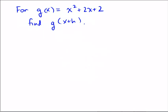How about the next one? For g of x equals x squared plus 2x plus 2, let's find g of x plus h. So g of x plus h would follow the rule for g, which is something squared plus 2 times something plus 2, where that something is now being replaced by the quantity x plus h.